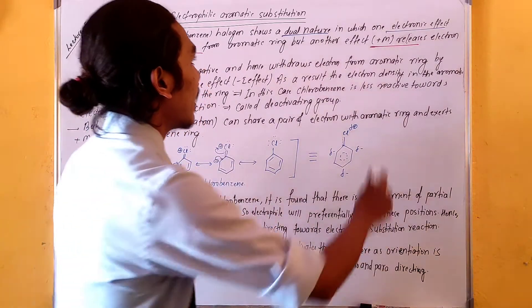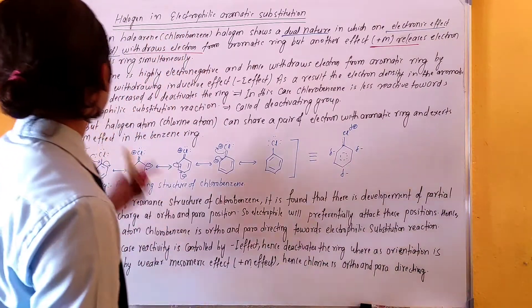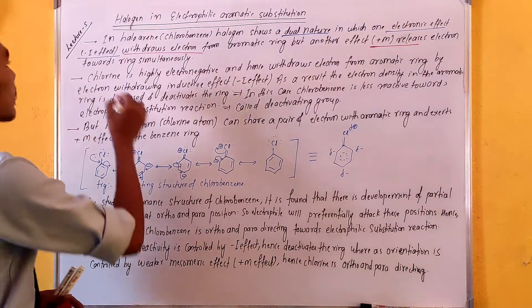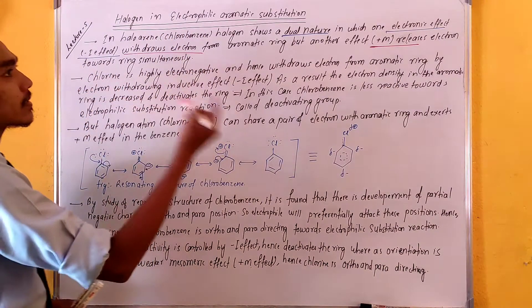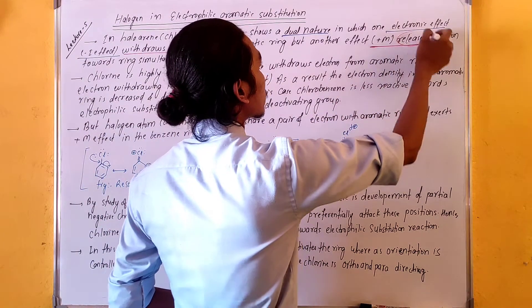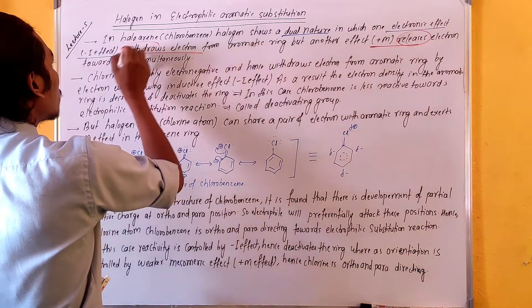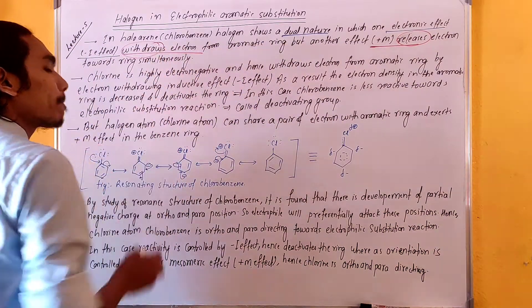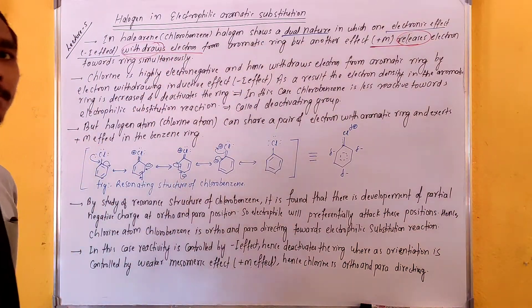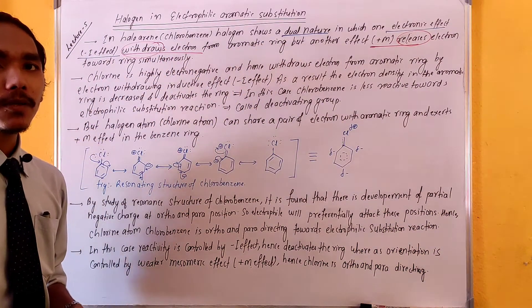The plus M effect releases electrons towards the ring. That means it acts as an electron-releasing group toward the aromatic ring.